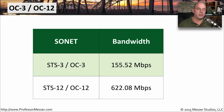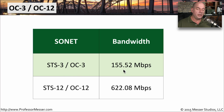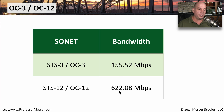In an earlier video, we talked about SONET and SDH-based networks, and you'll still see these used for leased lines from a telecommunications provider. As a reminder, the STS-3 or OC-3 links give you a bandwidth of 155.52 megabits per second, and an STS-12 or OC-12 connection provides 622.08 megabits per second of bandwidth.